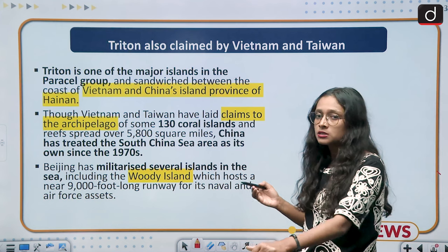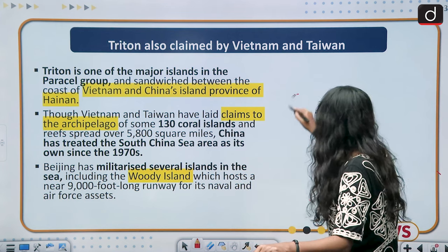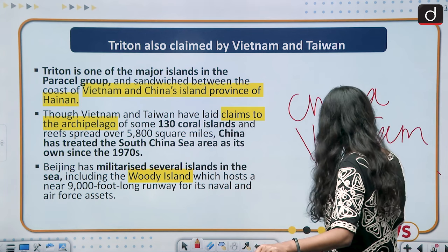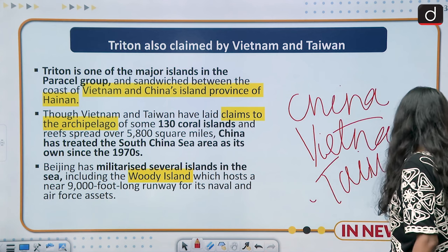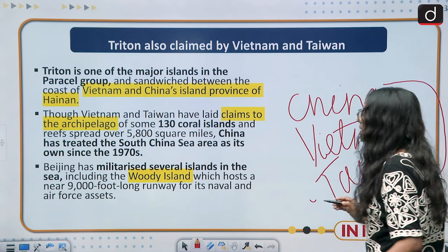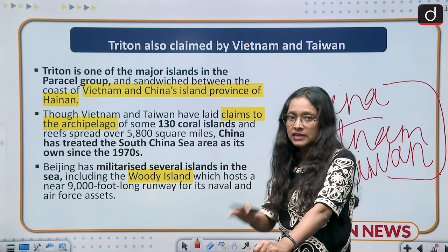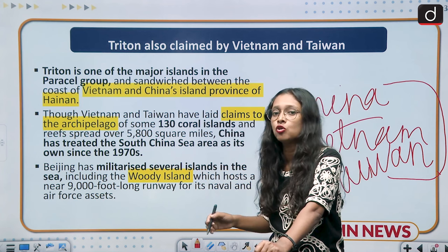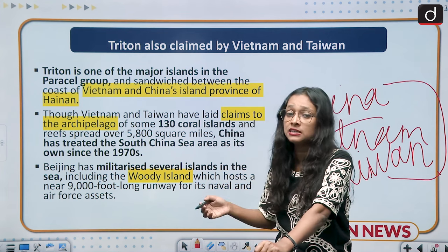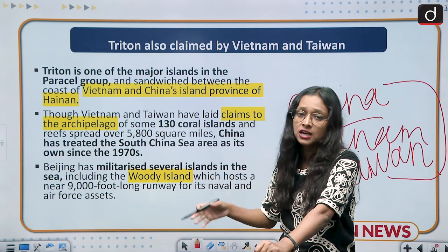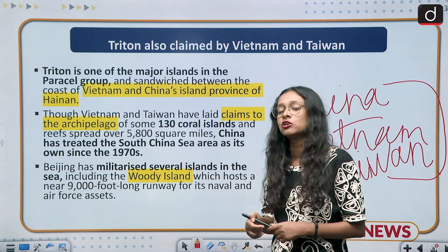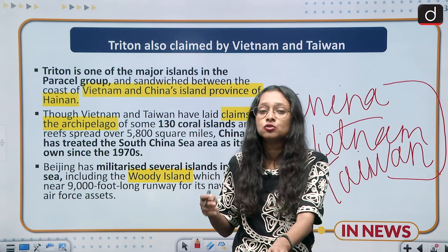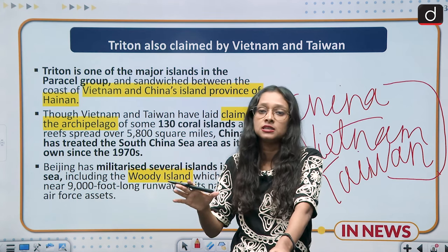Triton Island is disputed among three countries: China, Vietnam, and Taiwan — remember this for prelims. There are many coral islands in that area, and 130 coral islands have been claimed by Taiwan and Vietnam, but China asserts all of them belong to it and has claimed the area since 1974. The new dispute involves China building an airstrip there — an airstrip being a narrow stretch of land where aircraft can take off and land.